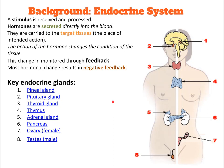Our body's internal systems need to remain relatively constant and within certain limits. Factors like pH, temperature, blood glucose, and carbon dioxide levels, as well as others, must be maintained. The balance is called homeostasis.